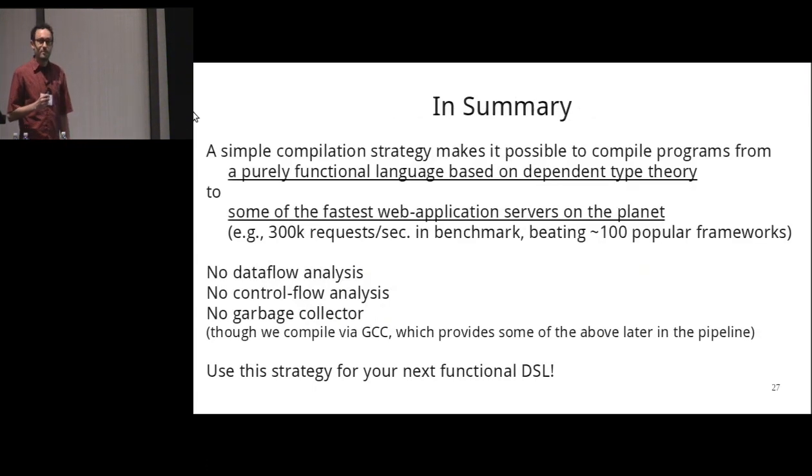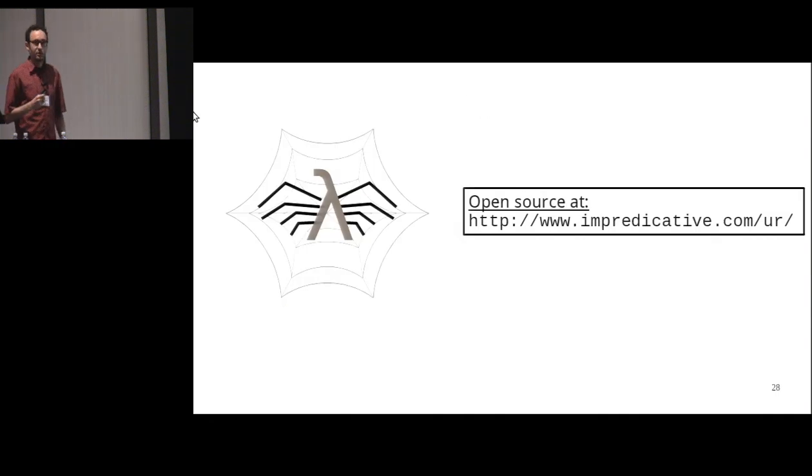So in summary, I've told you about a simple compilation strategy for taking very high-level code and turning it into very efficient low-level code. And it's simple because the compiler that UrWeb uses doesn't have any data flow analysis. It doesn't use any control flow analysis. There's no garbage collector or any of the other most common runtime system features that we're used to from functional languages. The compiler does work by generating C code, which goes into GCC, and then provides some of these features. But if you wanted to apply this recipe to your functional DSL, you wouldn't have to reimplement any of these things yourself. So I think it's a very practical choice for that kind of implementation. So I'll just finish with this URL to the UrWeb project. I'd encourage you to take a look and consider using it in your next web application, and I'd love to hear about experiences trying that. Thank you.